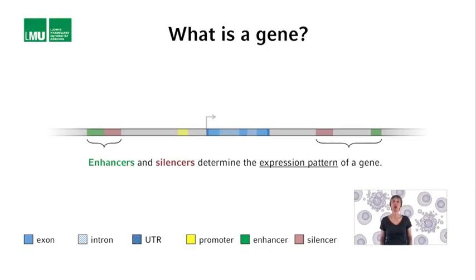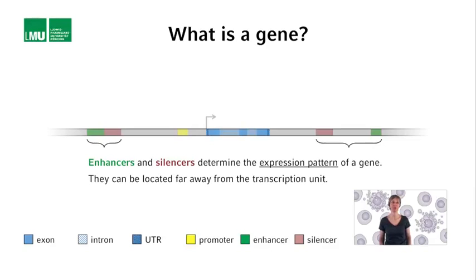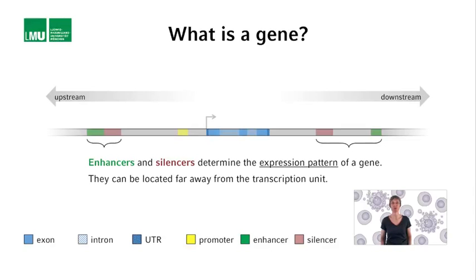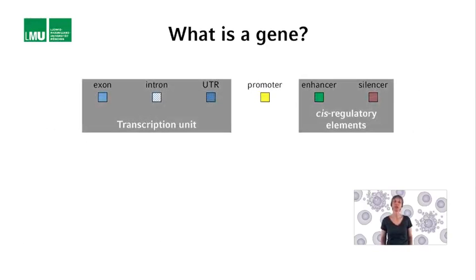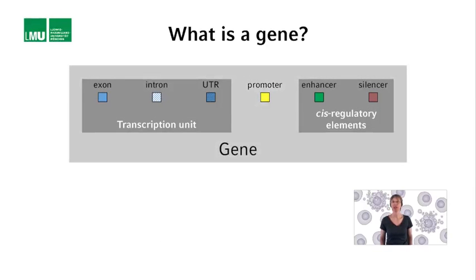Enhancers and silencers therefore determine at what time and in what cells transcription takes place — they basically determine what we call the expression pattern of a gene. Whereas promoters are generally located just before the transcription unit, enhancers and silencers can be located far away, sometimes hundreds of thousands of bases away. They can be found before and after transcription units — also referred to as upstream and downstream — as well as inside transcription units. Altogether, the transcription unit, the promoter, and the cis-acting regulatory elements constitute a gene or locus, containing the information necessary for the generation of one mature mRNA and the synthesis of one particular protein.